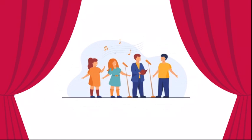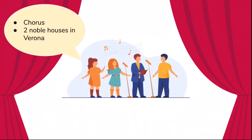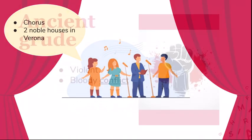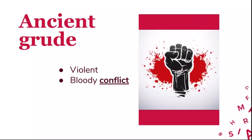They introduce that there are two noble houses in Verona. Verona is the place where this entire story takes place. Those two houses hold an ancient grudge — it's a very violent and bloody conflict.